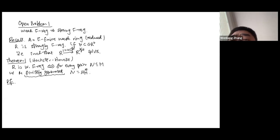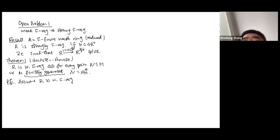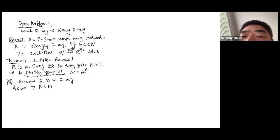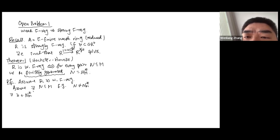The parallel statement for strong F-regularity is: R is strongly F-regular if and only if for every pair of modules — not necessarily finitely generated — every submodule N is tightly closed in M. Let's prove this. Only one direction requires a proof, because if I assume the statement for modules I can simply replace M by R and N by an ideal I.